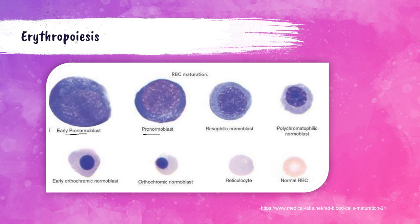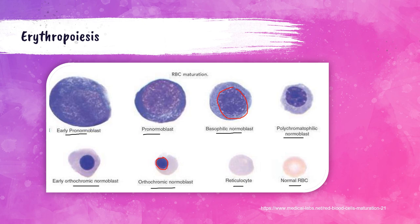This is a pictorial representation of the red blood cell maturation process: early pronormoblasts, pronormoblasts, basophilic normoblasts, polychromatophilic normoblasts, early orthochromic normoblasts, orthochromic normoblasts, reticulocyte, and normal red blood cells. Look most specifically at the nucleus — the basophilic normoblast has a larger nucleus compared to the orthochromic normoblast. The blast cells are very large in comparison to the orthochromic normoblasts and normal red blood cells. The more immature a blood cell is, the larger it's going to be, and it decreases in size as it matures.